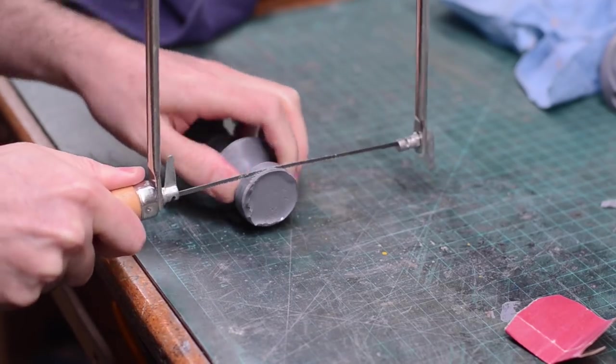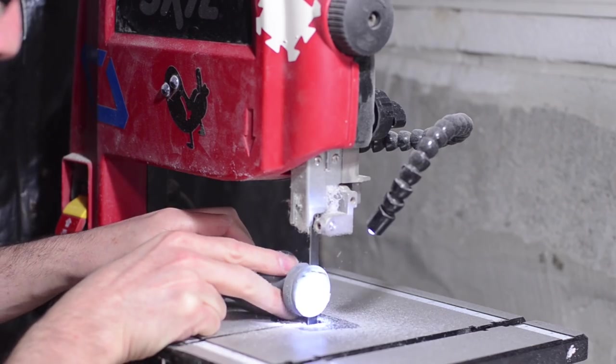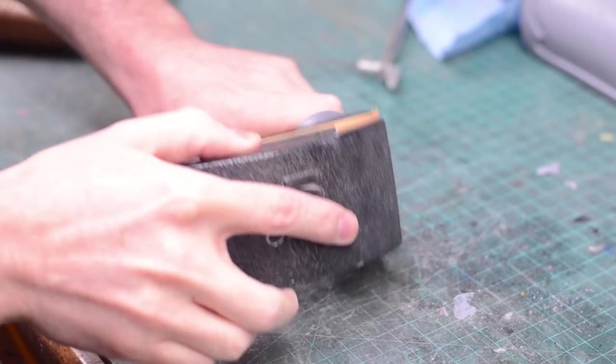If your castings still have the pouring sprues, those can be cut off with whatever saw you have available, then those remaining ends can be sanded smooth.